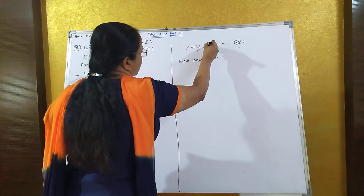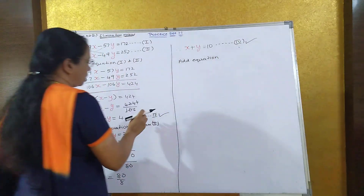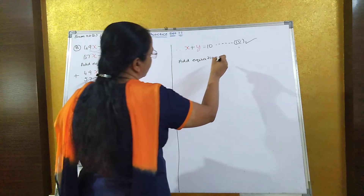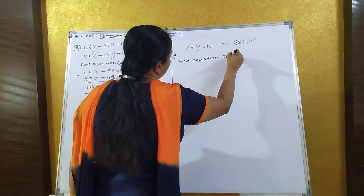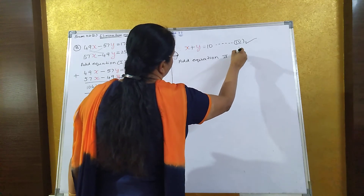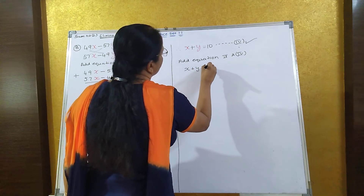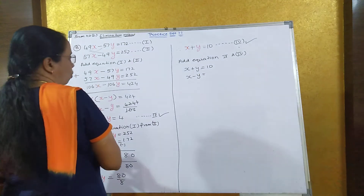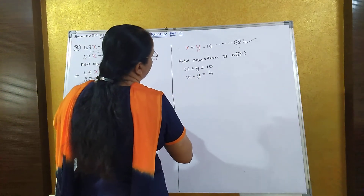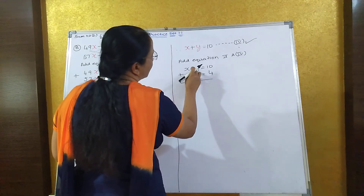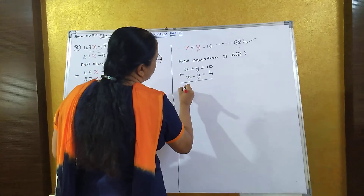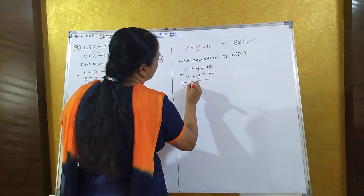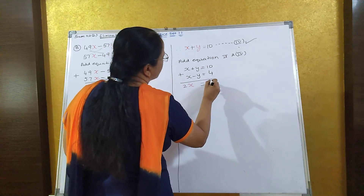Let us take this as equation 4. Now if you see equations 3 and 4: x minus y is equal to 4 and x plus y is equal to 10. So we will add equations 3 and 4. Always we have to add when such types of sums come. That is x plus y equals 10 and x minus y equals 4. When you add both of them, plus y and minus y will get eliminated. 2x is equal to 10 plus 4, which is 14.